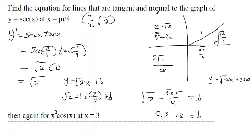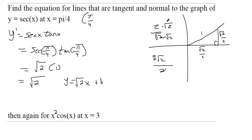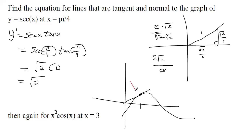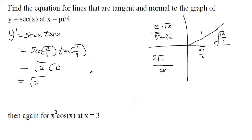This might be the first time you encounter the word 'normal' in calculus — it means something different than in statistics. The equation of a normal line just means it's perpendicular at the point. So if we have a curve and want the normal line at x = π/4, the tangent line is one line, and the normal line is perpendicular to it. All you need to do is take the slope and make it the negative reciprocal, because that's what a perpendicular line is. So the normal line is y = −1/√2 · x + b.